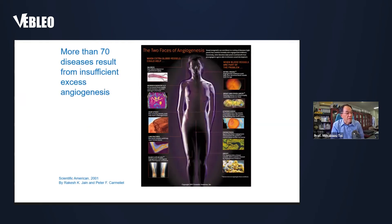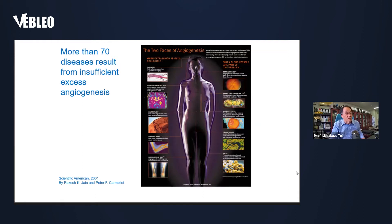This is a very famous slide published in 2001 by Professor Rakesh Jain and also by Judah Folkman. They concluded that more than 70% of major diseases are actually due to abnormalities in blood vessels — for instance, retinal disease, cancers including breast cancer, diabetes, rheumatitis, Alzheimer's disease, and fracture repair. So neovascularization and angiogenesis are a crucial, essential part of many diseases.